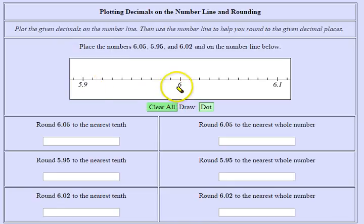Notice we have 5.9, 6, and 6.1, and they differ by one tenth. So one tenth more than 5.9 is 6, one tenth more than 6 is 6.1.